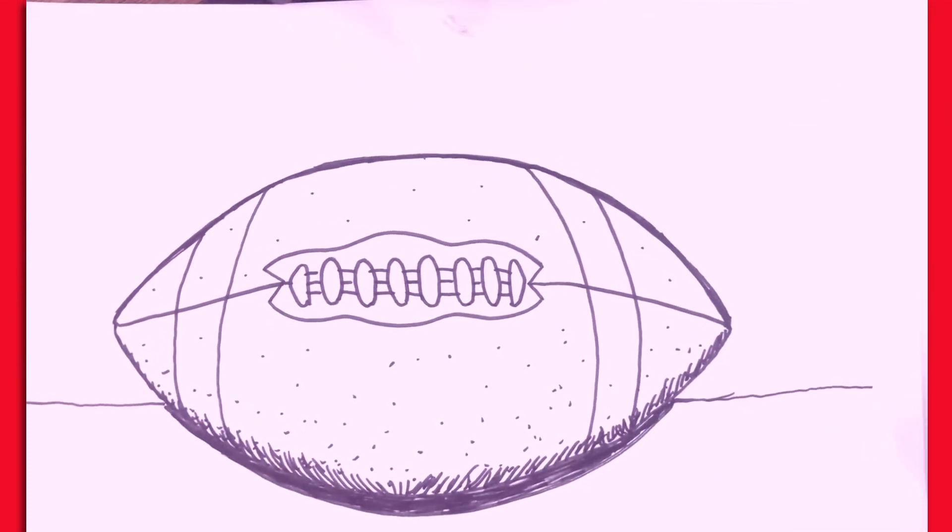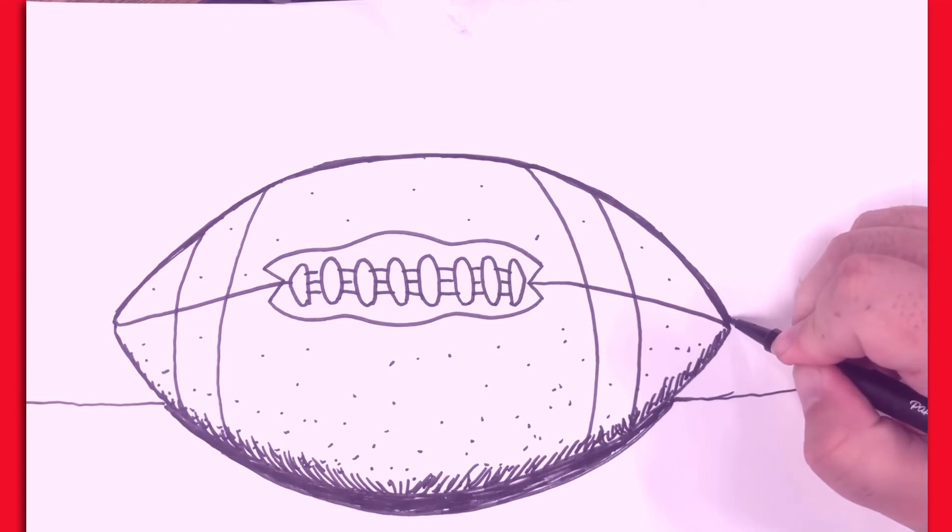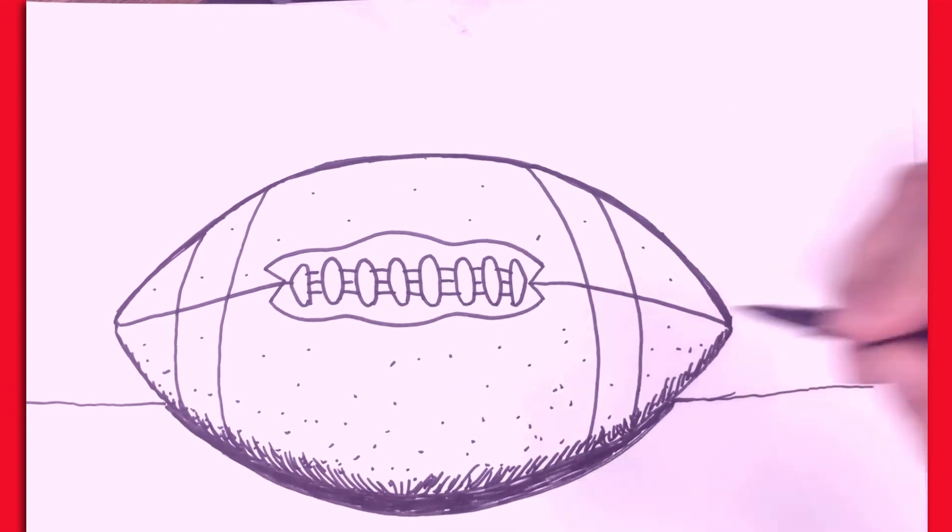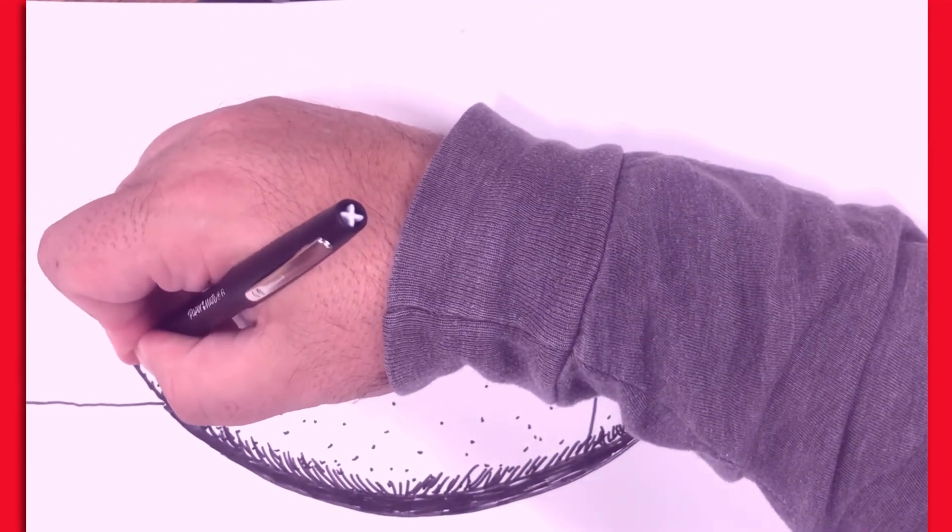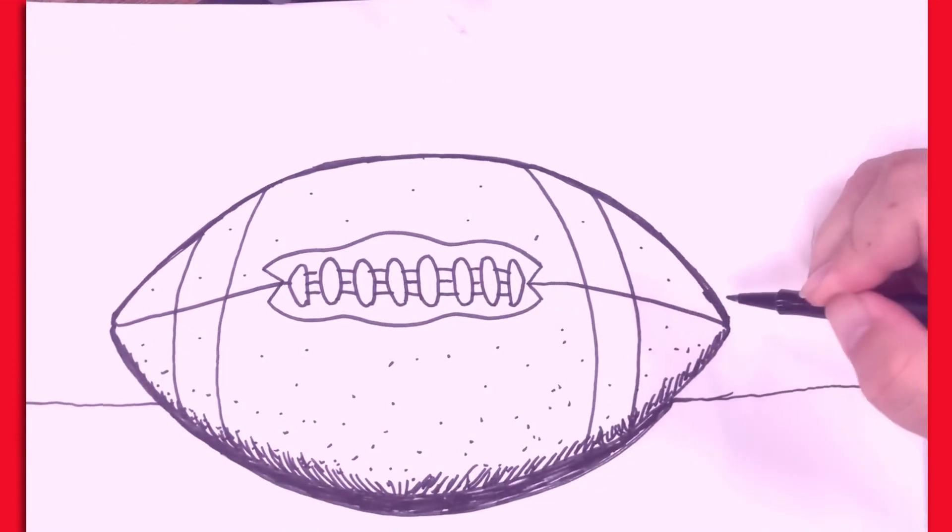Okay, now another detail to make the ball look a little more realistic is if you ever look at the end of a football, you'll notice that it's not perfectly sharp. There's just a tiny little dent right here on either end where the two seams come together. So just make a slight little dent right there like that.